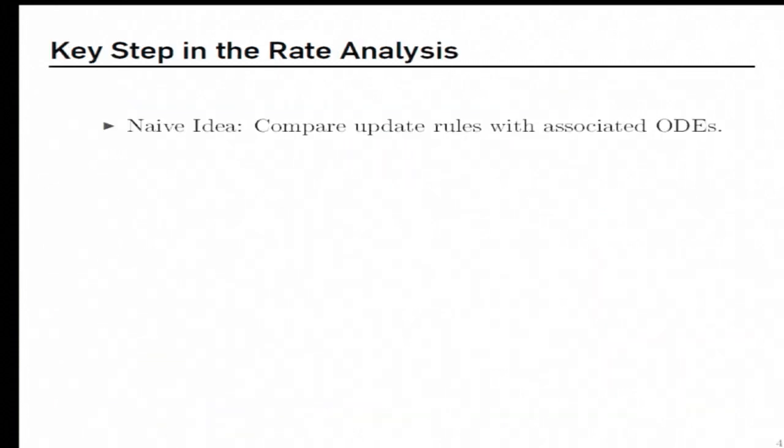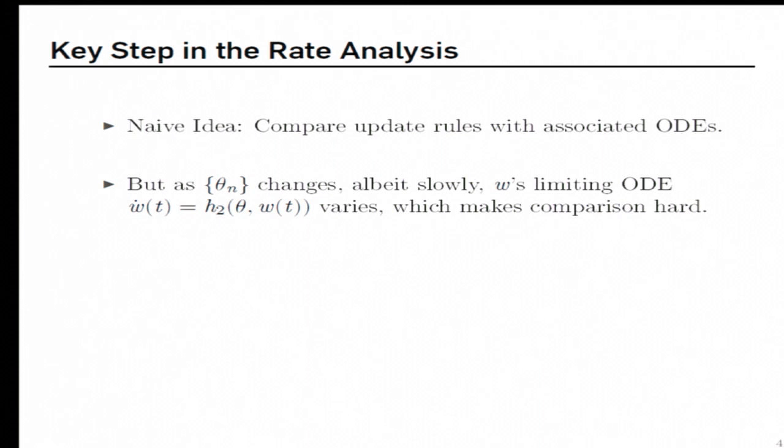So a naive analysis would be, well, we have update rules and we have some associated ODEs. We could perhaps go about directly comparing them. But we soon realized that since theta N evolves, the limiting ODE associated with the w changes, although slowly, but it changes. So recall that this is the limiting ODE and we have a theta, so this changes, this makes the comparison hard. So our strategy was to introduce a new update, z_N, defined as the difference between w_N and the solution of this ODE when theta is replaced by theta N.